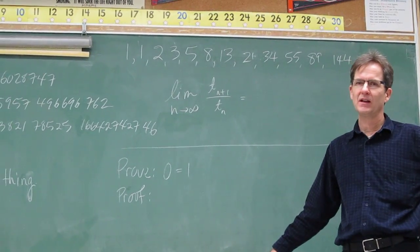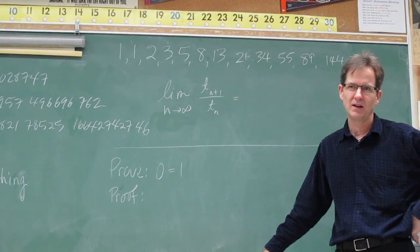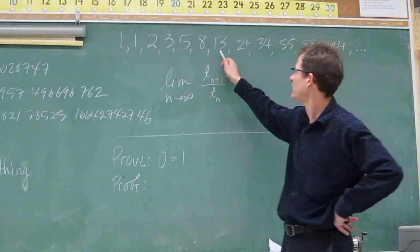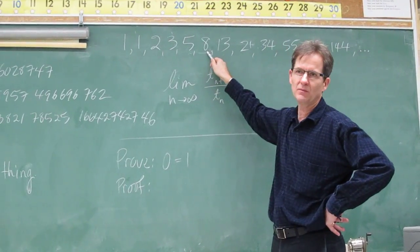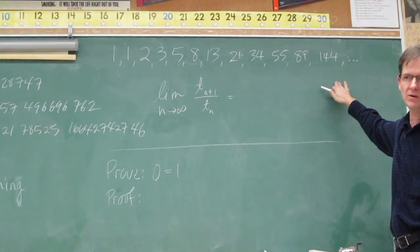So yesterday when we were talking about sequences, one of the sequences we looked at was the Fibonacci sequence. The numbers 1, 1, 2, 3, 5, 8, and so on, where each number is the sum of the previous two. So it goes forever and ever. The numbers keep getting bigger and bigger so it has no limit.